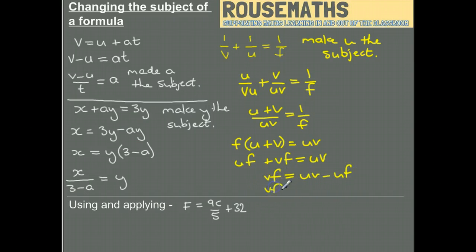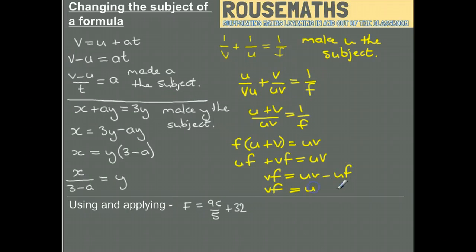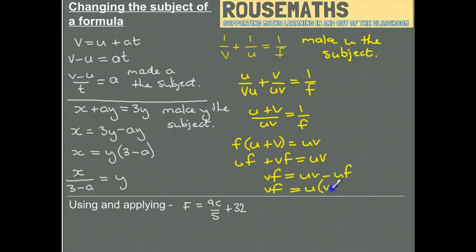And again, I'm going to need to factorize, and my u will come outside of those brackets. And then final step is I can divide by this bracket, giving me vf over v minus f, and that's equal to u.